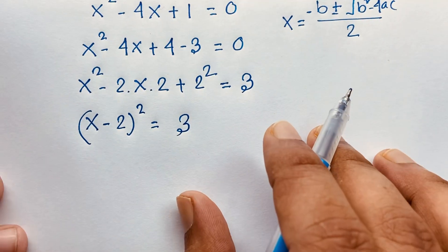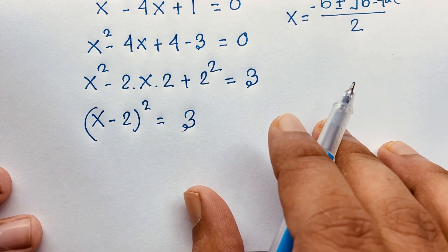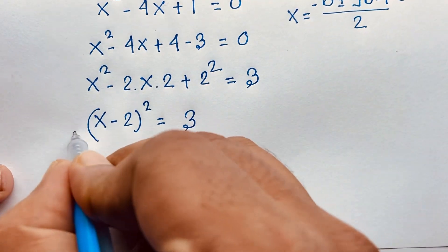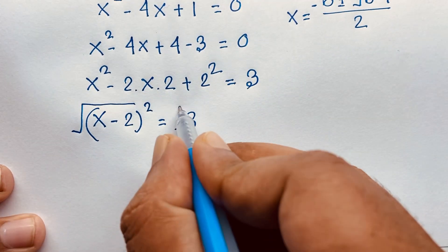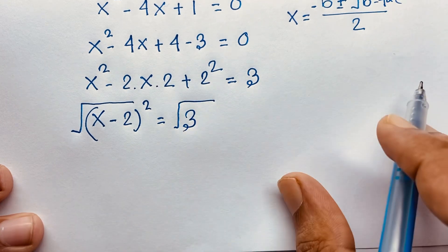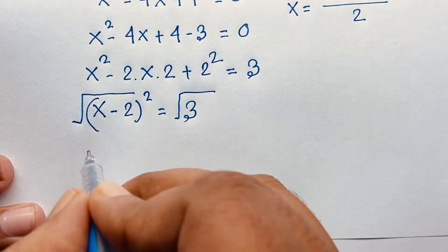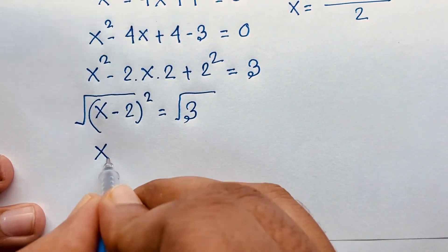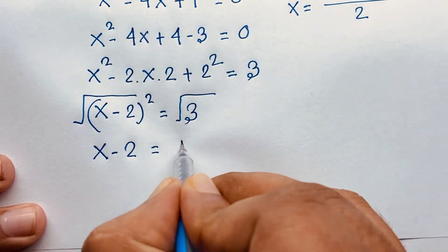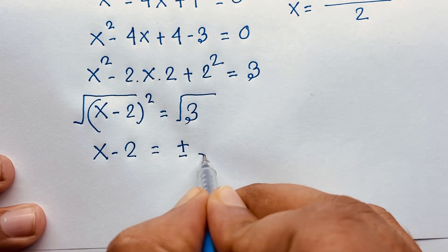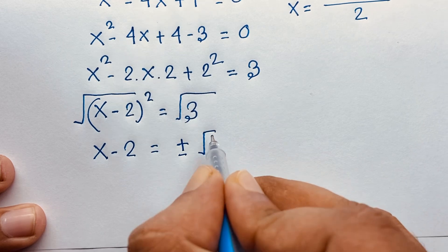I take the square root of both sides. So x minus 2 equals plus or minus square root 3.